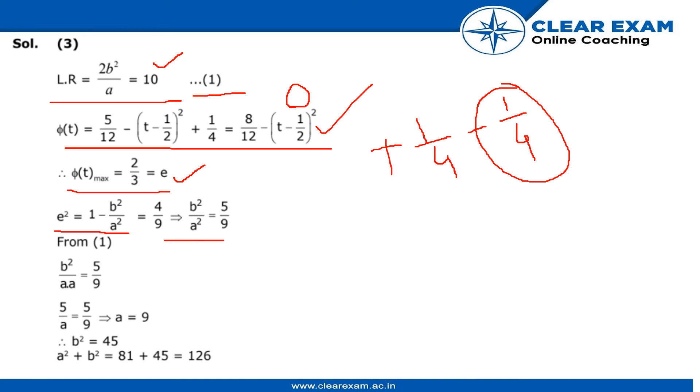Now we have put the value of e here and we got b²/a² equal to 5/9. Now using this value in equation 1, we got this thing.